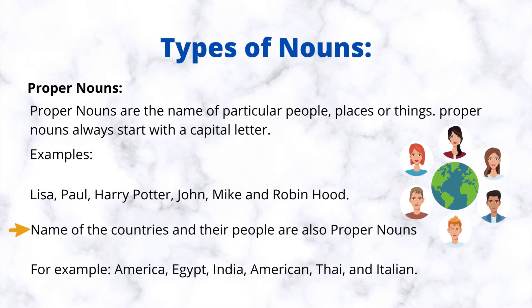Proper nouns always start with a capital letter. Examples: Lisa, Paul, Harry Potter, John, Mike, and Robin Hood. The name of countries and their people are also proper nouns. For example: America, Egypt, India, American, Thai, and Italian.